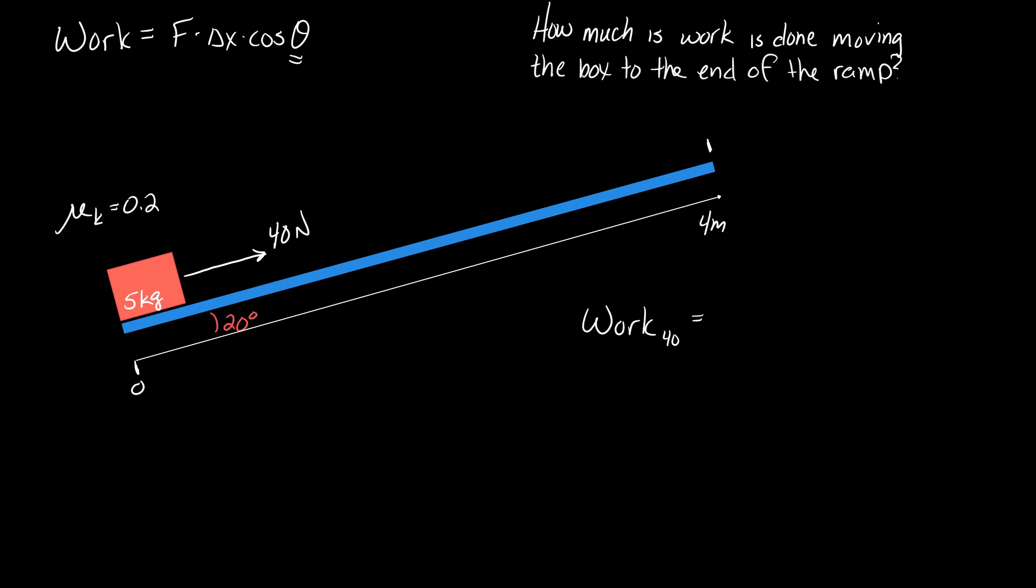That's the easiest one to talk about. It's 40 newtons. The box moves under its action 4 meters, and the angle between the applied force and the displacement is zero degrees. It does 160 joules of work.